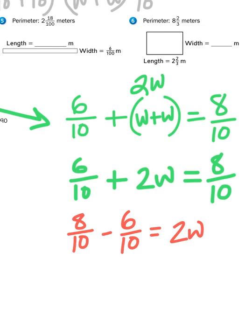Now, you've probably already done the mental math. Eight minus six is going to give me two, two tenths. So, two w equals two tenths.